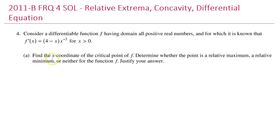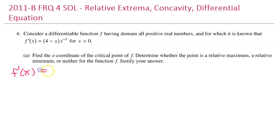Part A: Find the x coordinate of the critical point of f. Determine whether the point is a relative maximum, a relative minimum, or neither for the function f. Justify your answer. To find the critical points, I want to rewrite this equation. We have f prime equal to four minus x over x to the third power.